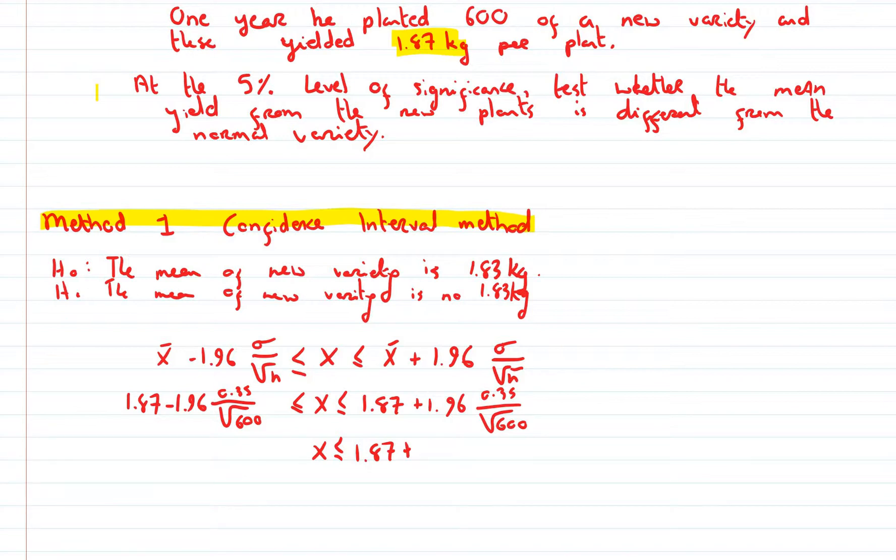So here we have plus, and we'll multiply that out to 0.028. And then on this side, 1.87 minus 0.028.